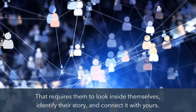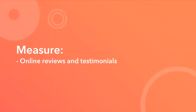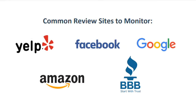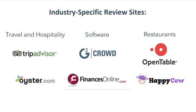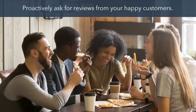To measure success at this level, look at metrics that show your brand is helping others. One great thing to look for is online reviews and testimonials. Thanks to social media and online review sites, it's easier than ever to find what your customers are writing about you. Some of the more common review sites to monitor are Yelp, Facebook, Google, Amazon, and Better Business Bureau. There are also industry-specific review sites you should claim — such as TripAdvisor and Oyster in the travel and hospitality industries, G2 Crowd and Finances Online in the software industries, and OpenTable and Happy Cow in the restaurant industries. Monitoring and measuring the ratings and reviews you're getting on these sites will help you make educated decisions. You'll also want to proactively ask for reviews from your happy customers.